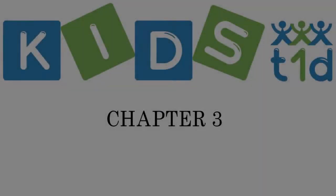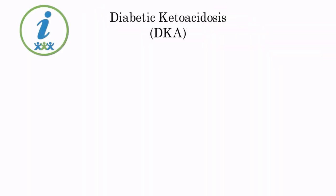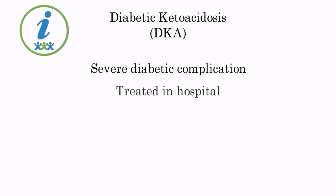Chapter 3: Diabetic Ketoacidosis. In this chapter we will have an in-depth look at diabetic ketoacidosis, commonly referred to as DKA. DKA is a severe diabetic complication which needs to be treated and managed in hospital.